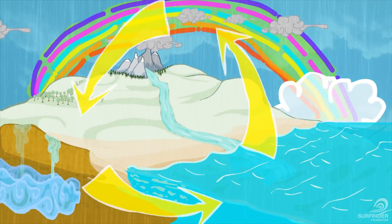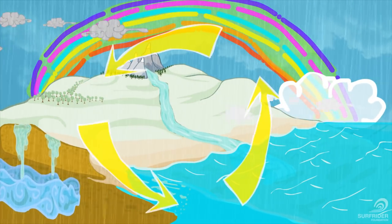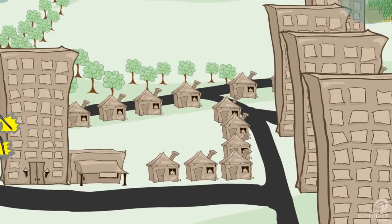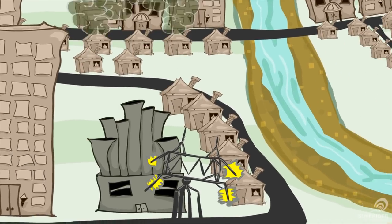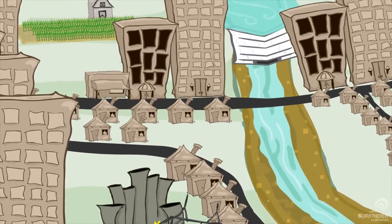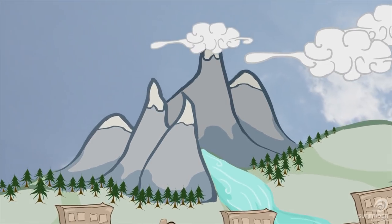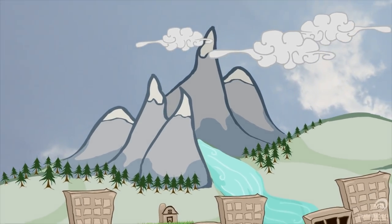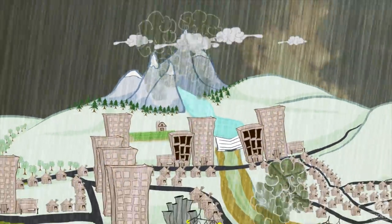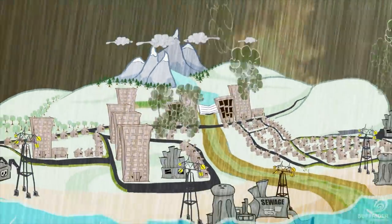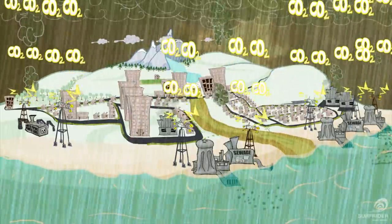But you probably don't know the entire story. Before it gets to your home, water often travels hundreds or sometimes thousands of miles through canals and pipes from faraway mountains and rivers. And when we're done using it, the water enters the ocean polluted, as a result of our wasteful water systems.